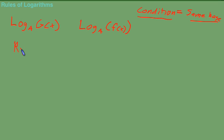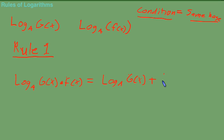So if I write Rule 1 - I don't have a name for this, call it the multiplication rule, additive rule, whatever you like - but what it states is: log base a of g(x) multiplied by f(x) equals log base a of g(x) plus log base a of f(x).